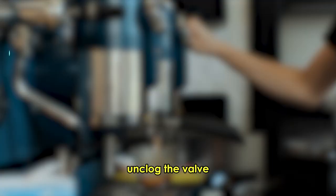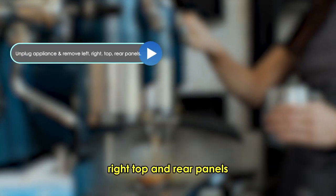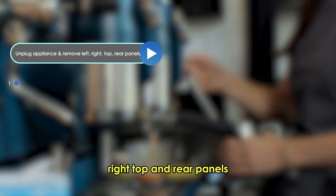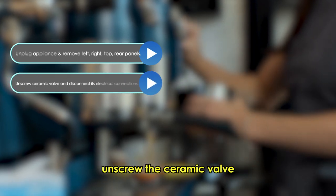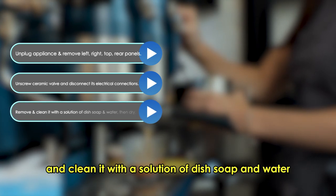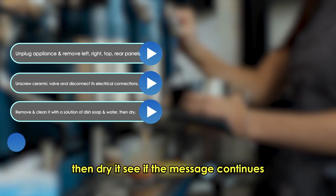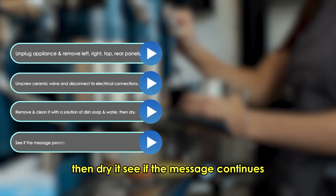Unclog the valve. Unplug the appliance and remove the left, right, top, and rear panels. Unscrew the ceramic valve and disconnect its electrical connections. Remove and clean it with a solution of dish soap and water, then dry it. See if the message continues.